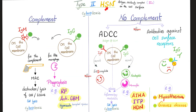Clinical examples of type 2 hypersensitivity: complement-mediated includes rheumatic fever, anti-glomerular basement membrane antibody disease (Goodpasture syndrome), and hyperacute transplant rejection — where the transplanted kidney begins dying while the surgeon is still operating. Non-complement mediated: ADCC includes autoimmune hemolytic anemia, immune thrombocytopenia, and hemolytic disease of the newborn. Antibodies against receptors: inhibition includes myasthenia gravis; stimulation has the singular example of Graves' disease.